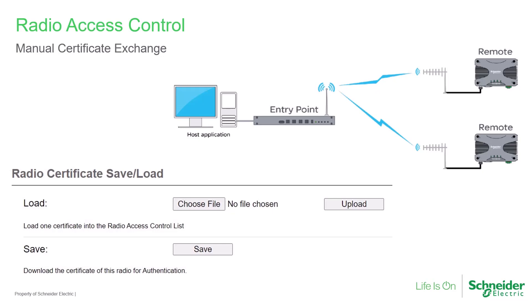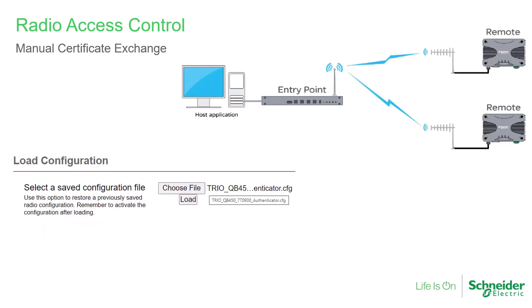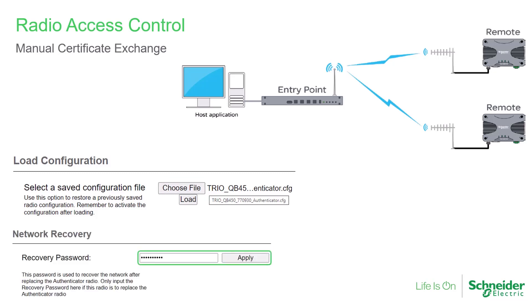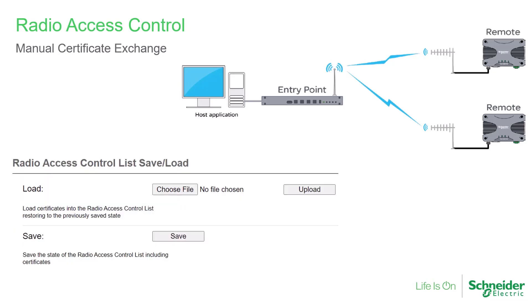Optionally, an entire system could be configured manually. Each radio would be reconfigured for RAC mode as either authenticator or supplicant. Then the certificate of the authenticator would be uploaded into supplicants, and the supplicant certificates would be uploaded into the authenticator. The most likely use, however, will be when replacing an authenticator. The new authenticator must be loaded with the original authenticator's configuration file, its recovery password, and the archived radio access control list, which includes supplicant certificates. Supplicants will then authenticate with the new authenticator after challenging it with the recovery password.